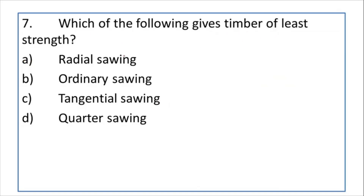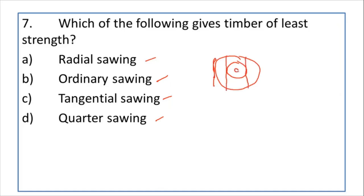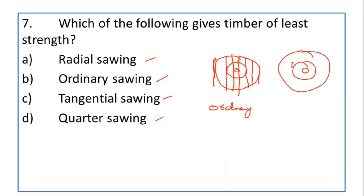Which of the following gives timber of least strength? There are four types of sawing: ordinary sawing, tangential sawing, quarter sawing, and radial sawing. In ordinary sawing, cuts are made tangentially at the annular rings. In tangential sawing, a single annular ring is selected and cuts are made tangentially around it.